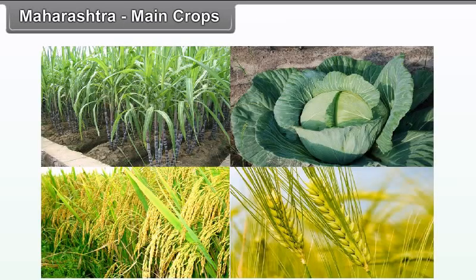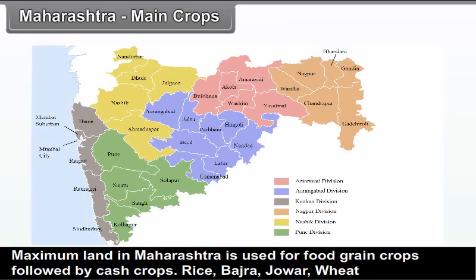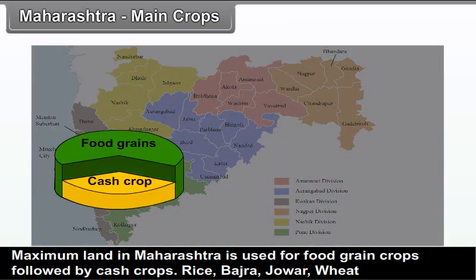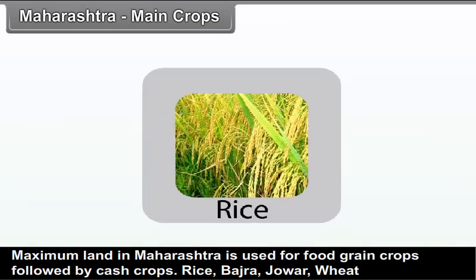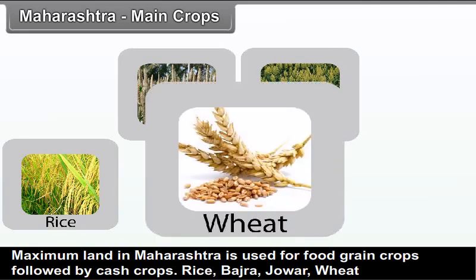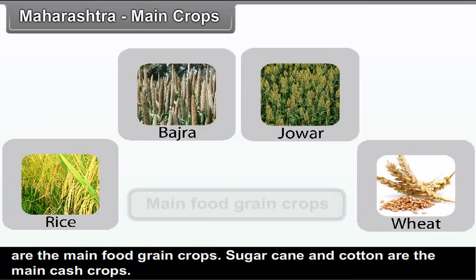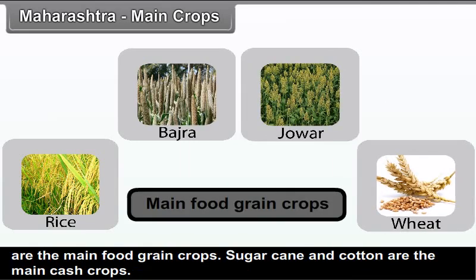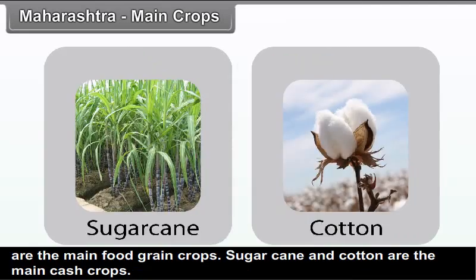Maharashtra Main Crops: Maximum land in Maharashtra is used for food grain crops, followed by cash crops. Rice, Bajra, Jowar, and Wheat are the main food grain crops. Sugarcane and cotton are the main cash crops.